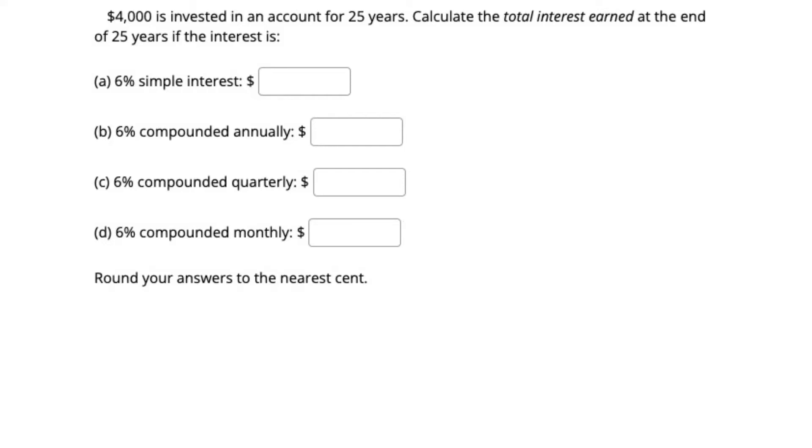$4,000 is invested in an account for 25 years. Calculate the total interest earned at the end of 25 years if the interest is: (a) 6% simple interest, (b) 6% compounded annually, (c) 6% compounded quarterly, and (d) 6% compounded monthly. Round your answers to the nearest cent.